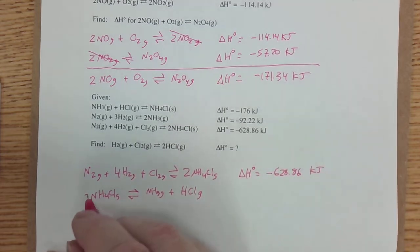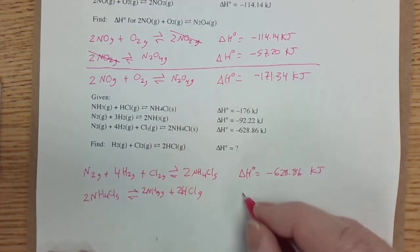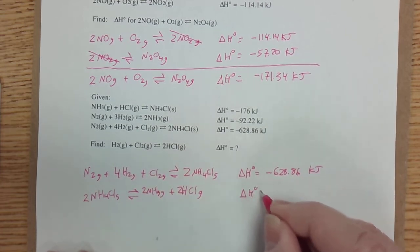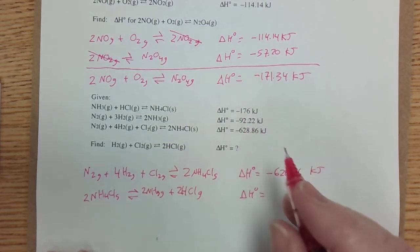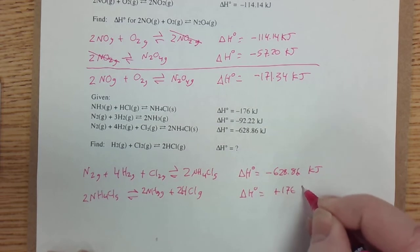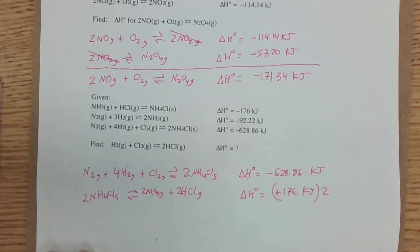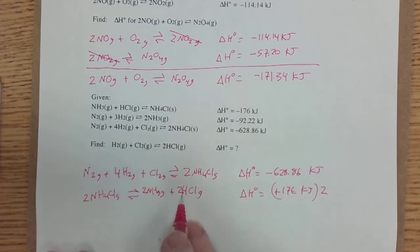I'm going to say NH4Cl solid gives me NH3 gas and HCl gas. And I'm going to multiply it all by 2 because I want two HCls. So my delta H naught, which was negative 176, is now positive 176 kilojoules. And I'm going to multiply that value by 2 because I multiplied by 2 over here.